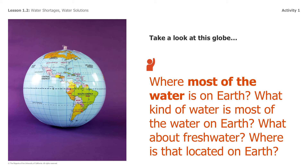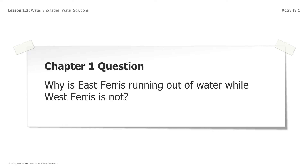But what about fresh water? Where would that be located on earth? Well, that is the thing that we're going to be discussing today. It's about fresh water. Most of the fresh water is actually found underground and in glaciers, and only a really small amount of it is available for human use.